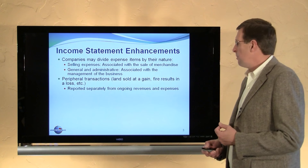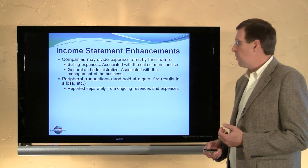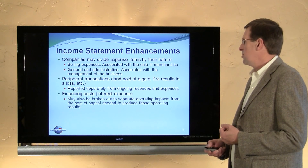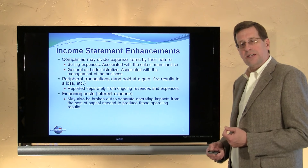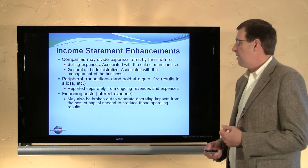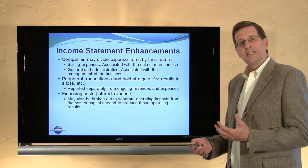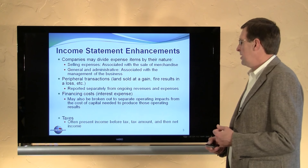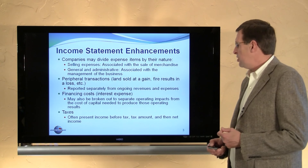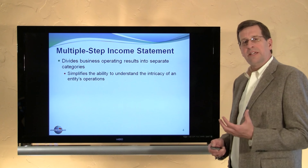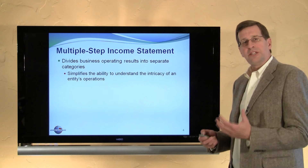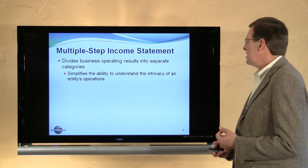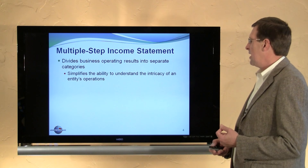We may also separately show peripheral transactions such as land sold at a gain — things that are separately reported from ongoing revenues and expenses. Financing costs such as interest expense may be broken out so that we can see the difference between operating performance and the cost of operating the business. Taxes as well may be shown in a separate category. This gives rise often times to a presentation that we simply call a multiple step income statement, where we divide business operating results into separate categories.